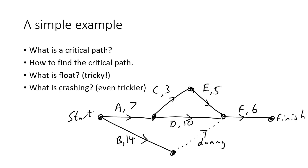In this video I'm going to keep using this simple example you can see at the bottom, and we're going to look at: what is a critical path, how to find the critical path, what is float, and what is crashing. There are a lot of tricks in here — crashing is notoriously difficult for some people — but if we keep looking at this simple example you'll be able to get the concepts and then adapt them to any question.